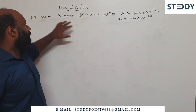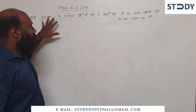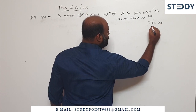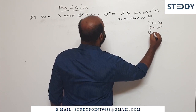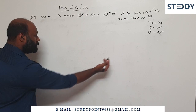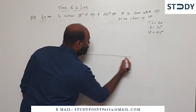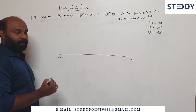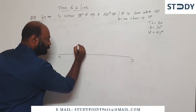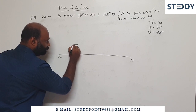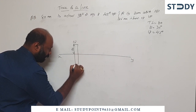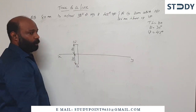What we are going to do is find the true length. The true length TL is equal to 80 mm, theta is equal to 30 degrees and phi is equal to 45 degrees. We are going to use the given data: A is 20 mm above HP, so 20 mm above the XY line, and 25 mm in front of VP, so 25 mm below the XY line. Front view and top view complete.